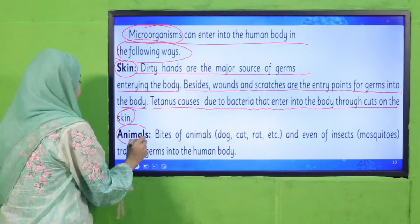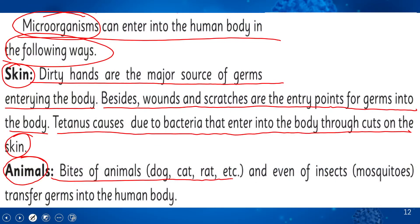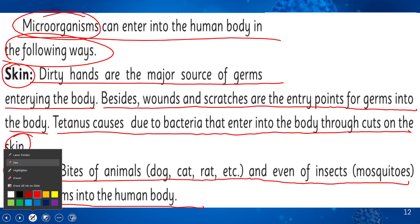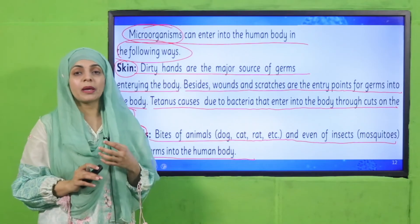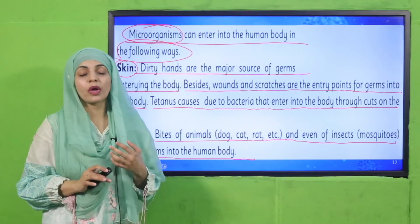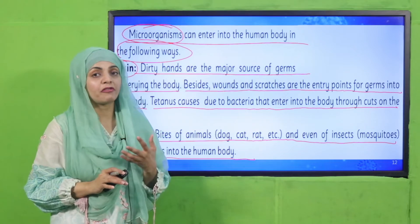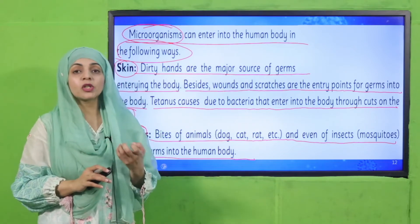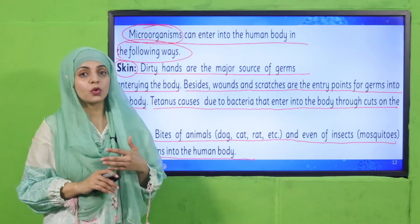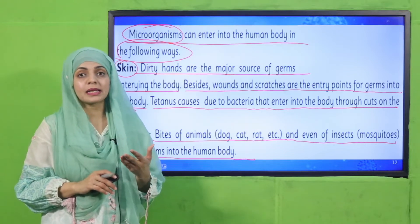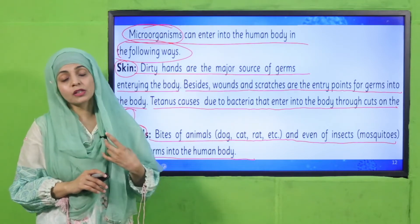Animal bites — from dogs, cats, rats, and even insects like mosquitoes — transfer germs into the human body. If any animal bites you, germs or microorganisms from that animal can enter your body and cause infection. Mosquito bites can also transmit germs. Dengue is a disease caused by mosquito bites.